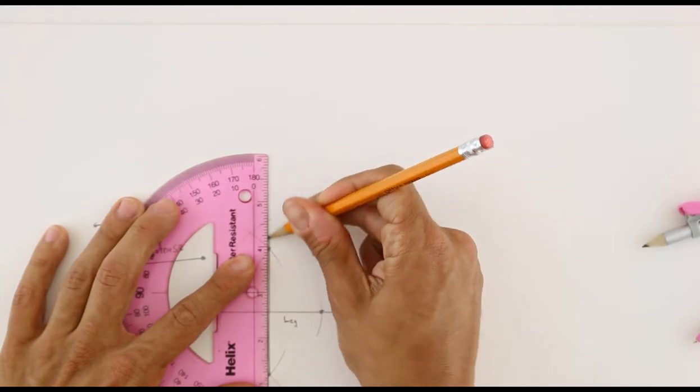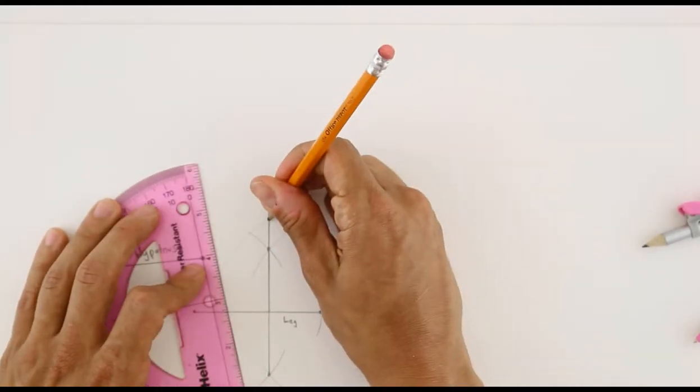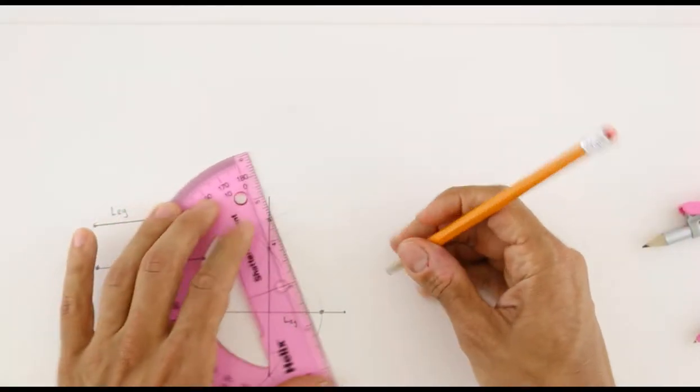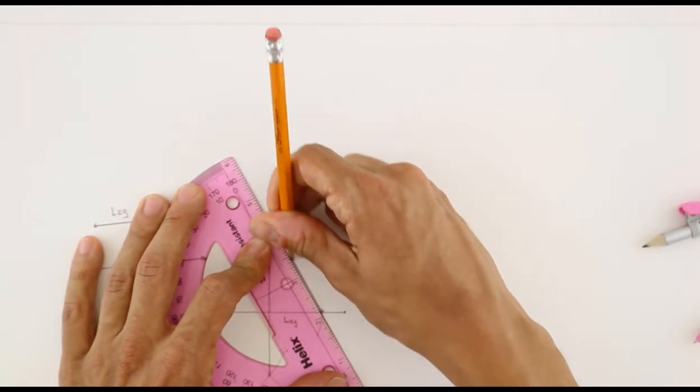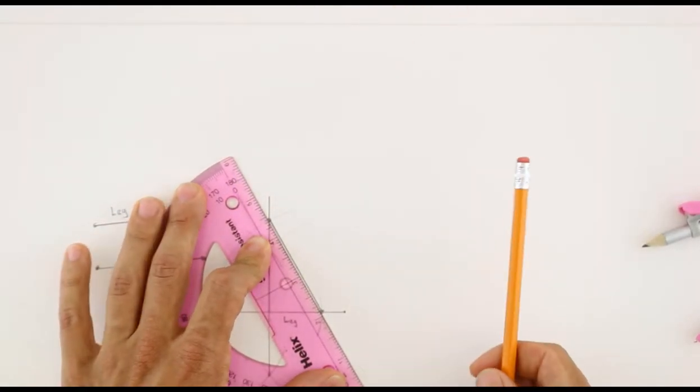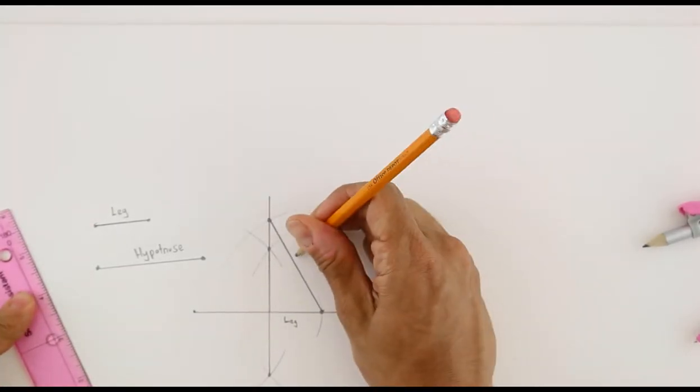As you can see, my hypotenuse is too long, so I can simply line up my straight edge and lengthen this segment. But the intersection of that line and the arc for my hypotenuse will give me a hypotenuse of equal measure to my original.